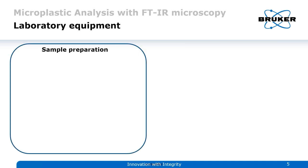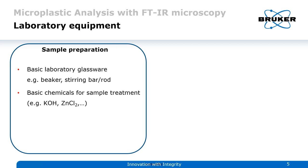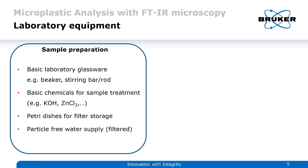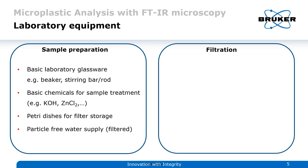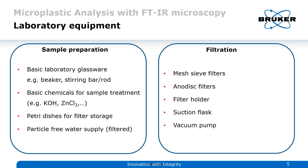For sample preparation we need basic glassware — beakers, stirring rods, maybe a funnel — basic chemicals like potassium hydroxide and zinc chloride, Petri dishes for filter storage, and a particle-free water supply so we're not contaminating our sample. For filtration we need mesh sieve filters for pre-sorting large particles from smaller ones, anodisk filters for the final filtration of particles measured with the microscope, a filter holder, suction flask, and vacuum pump.